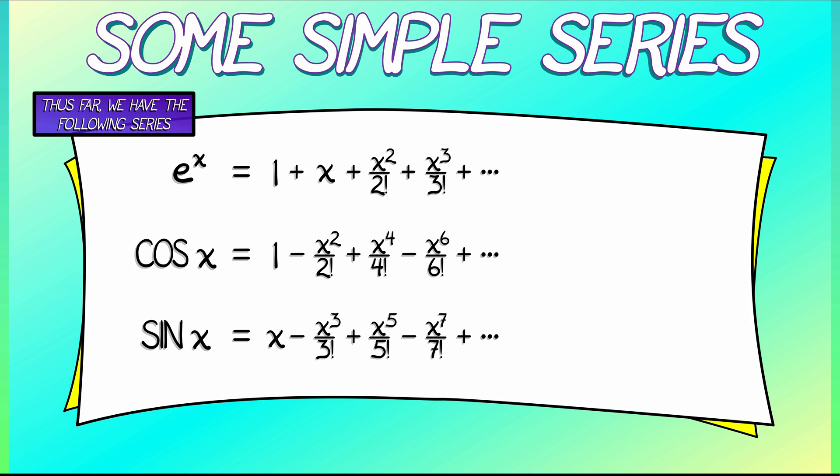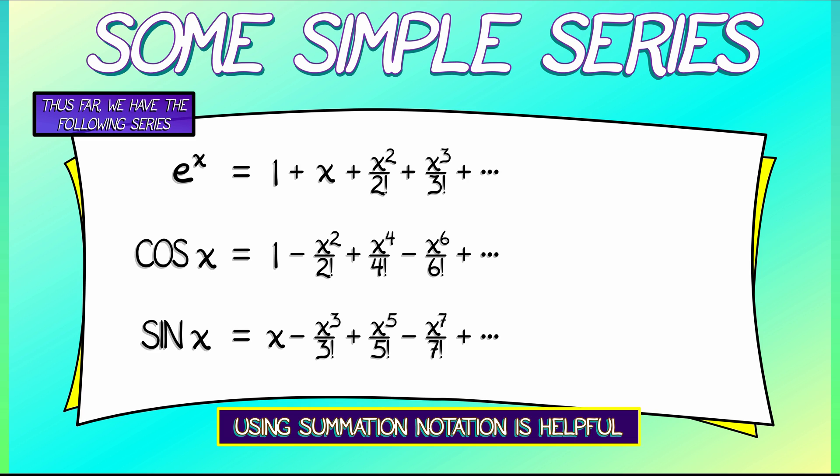What we have found is that we can compactly encode this using summation notation. So for the exponential series, we have the sum k goes from 0 to infinity, x to the k over k factorial.